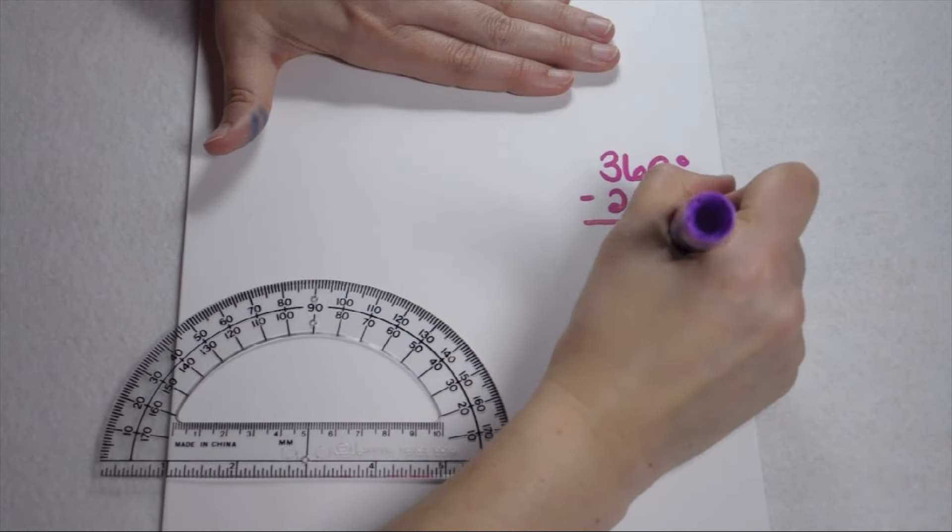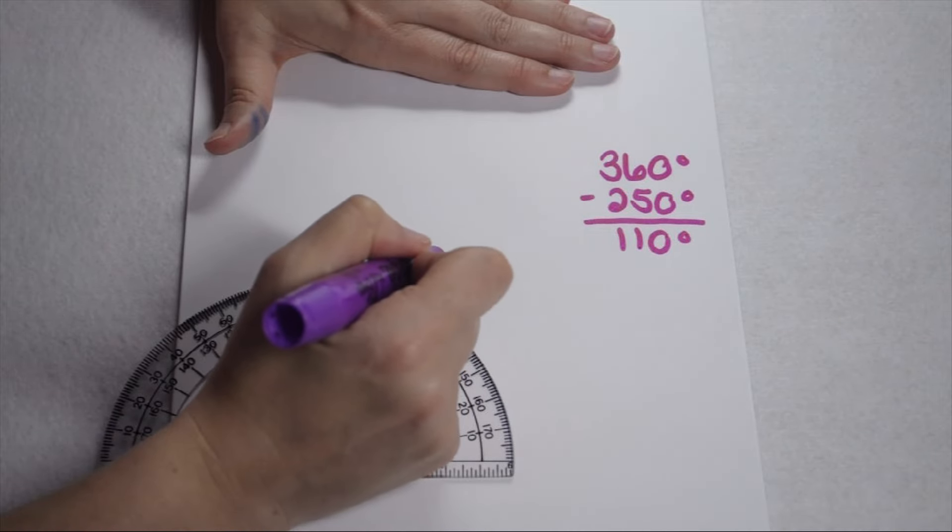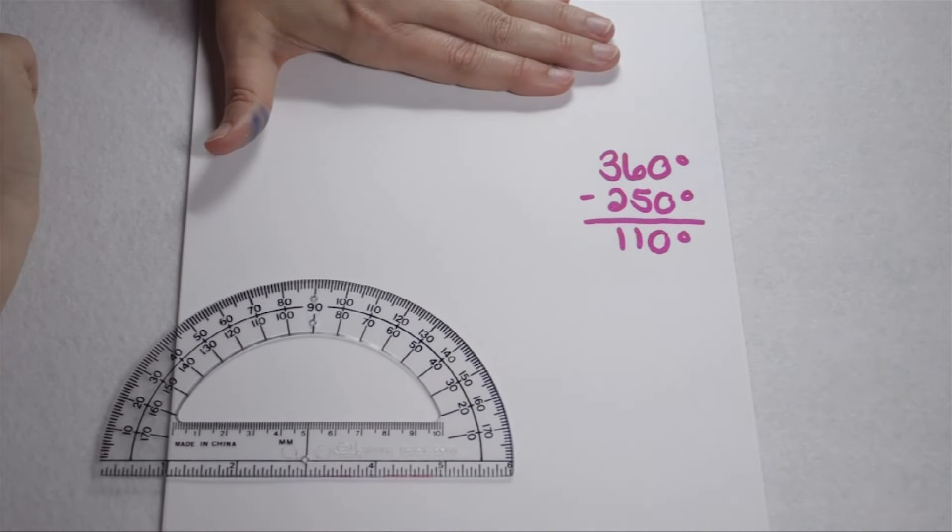This leaves us with 110 degrees, which we know is going to be the angle on the inside of our reflex angle.